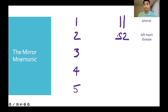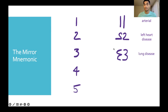For class two, we reflect it and see how it looks like a heart. This helps you remember that group two is due to left heart disease. For group three, we reflect the three and it looks like the lungs, so this should help you remember that group three is due to lung disease.